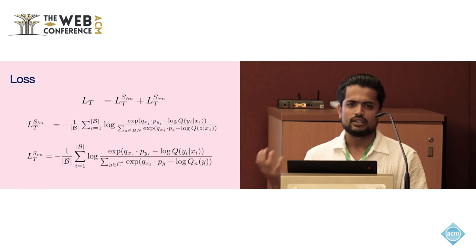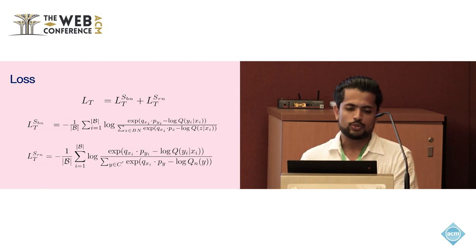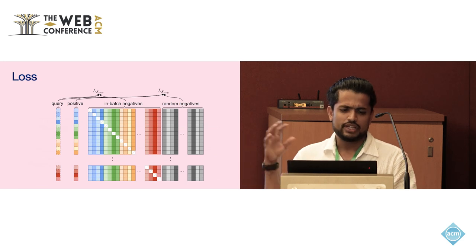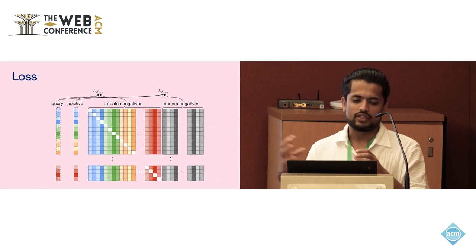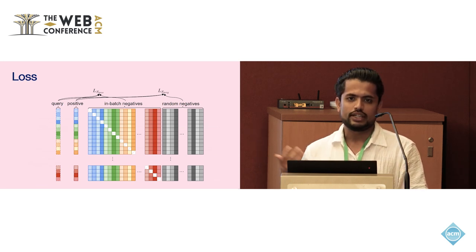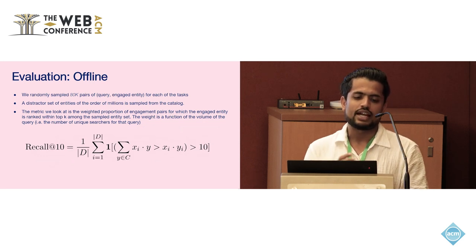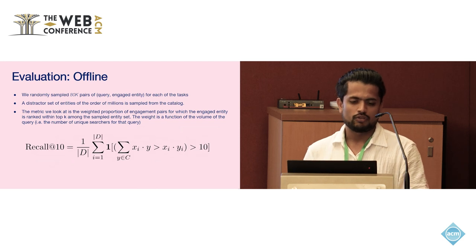To train these encoders, we use the standard sampled softmax loss with logit correction. We also use random sampled negatives in addition to in-batch negatives to steer away from the engagement distribution of the corpus represented in the in-batch negatives. The same random negatives are used for all examples in the batch, increasing data efficiency quite a lot. For offline evaluation, we use recall at 10, which measures if the positive entity from a positive pair is ranked in the top 10 of the corpus. Since this metric scales linearly with corpus size, we use a corpus size of 5 or 10 million during offline evaluation.